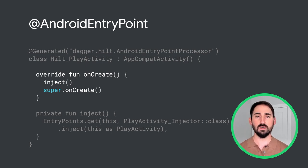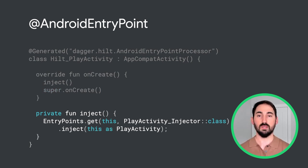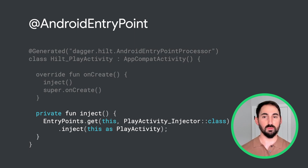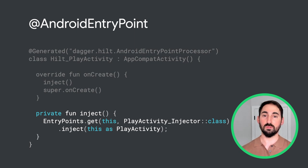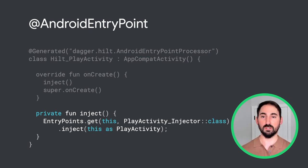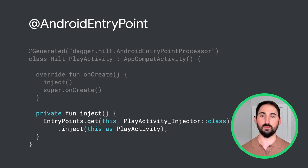Now let's take a look at what the inject method does. To inject the activity, we first need an instance of its injector. In Hilt, the injector for an activity is an entry point, and we can get an instance of the injector using the EntryPoints utility class. In this example, the injector class is called PlayActivity_Injector. As you may have guessed, this class is also generated by Hilt annotation processors.